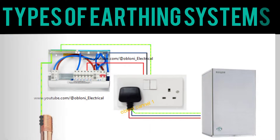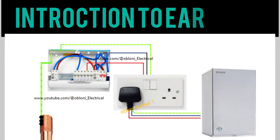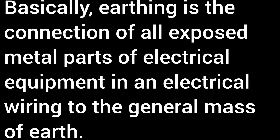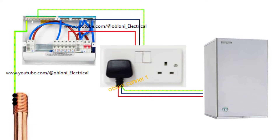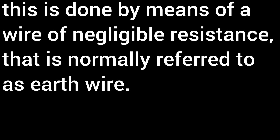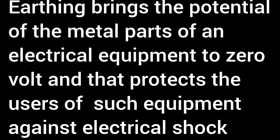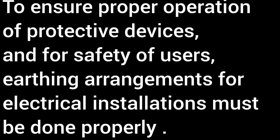Types of earthing systems. Earthing is the connection of all exposed metal parts of electrical equipment in an electrical wiring to the general mass of earth. This is done by means of a wire of negligible resistance, normally referred to as the earth wire. Earthing brings the potential of the metal parts of an electrical equipment to zero volts, and that protects the users of such equipment against electrical shock. To ensure proper operation of protective devices and for safety of users, earthing arrangements for electrical installations must be done properly.